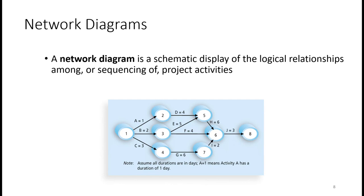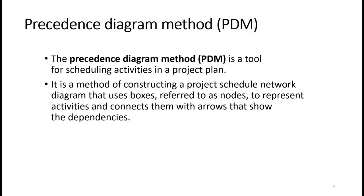It is important in every network diagram to have a predecessor and a successor. A predecessor is the contingency for the next task, and the successor is the one that appears after one task has been completed. In this case, number one is considered the predecessor and two, three, and four are the successors of number one.